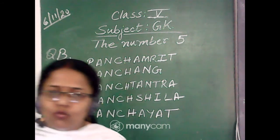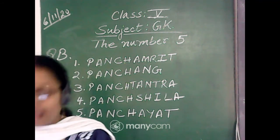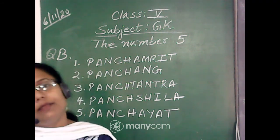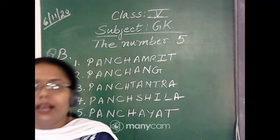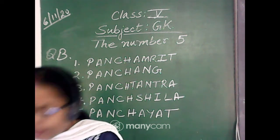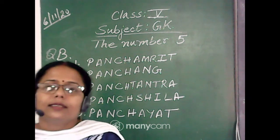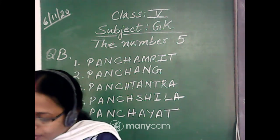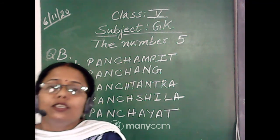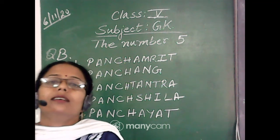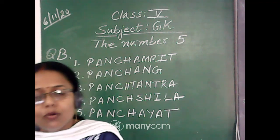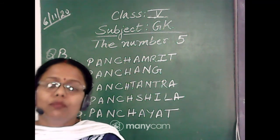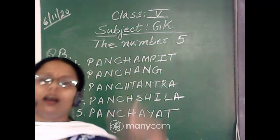There are two more things I will tell you. Our five elements of nature are called Panchabhuta — earth, wind, fire, water and space, that is sky or Akash. These are the five most important elements of nature, with which we ourselves are also built up. Our existence depends on these five elements.